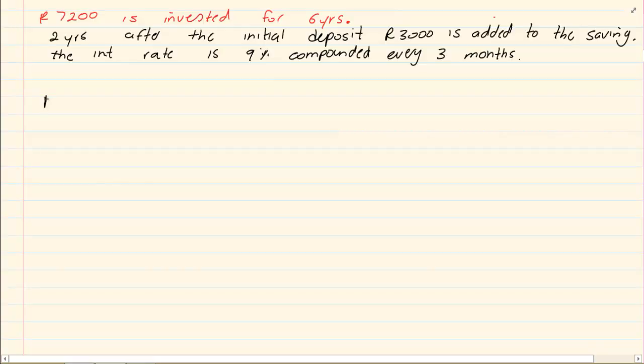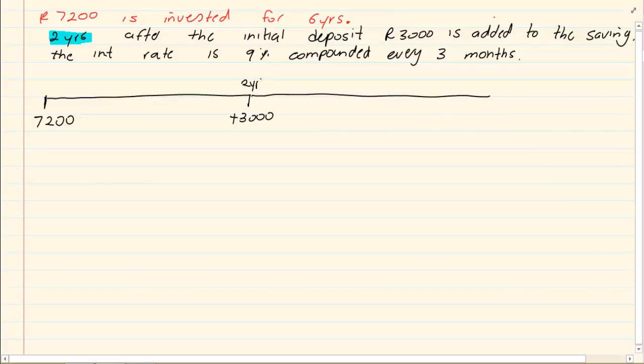We have an investment in the beginning where we are starting with 7200 Rand. What happens is that after 2 years you stop, because we are investing another 3000 Rand. So we are adding 3000 Rand. Then we are continuing. But we know we are going till 6 years. But from this point 2 years till the end of 6 years is only 4 years. Through this entire investment we know we are getting a 9% interest rate but it is compounded every 3 months.